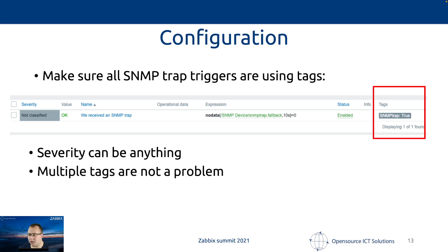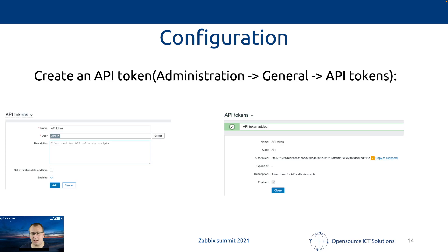How to configure this? This is where tags come in. On the trigger — specifically a trigger where SNMP traps arrive — we should add a tag; it can be anything, but here I've made it 'SNMP trap' with a value of 'true'. Severity doesn't really matter, and multiple tags on this trigger are no problem. We use this tag to call an action, and within that action we make sure API calls are executed.